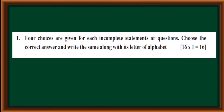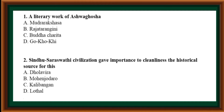First main: 4 choices are given for each incomplete statement or question. Choose the correct answer and write it along with its letter of alphabet. A literary work of Ashwagosha: options are Mudra Rakshasa, Raj Tarangini, Budha Charita, Gokoki. Correct answer is Option C: Budha Charita.